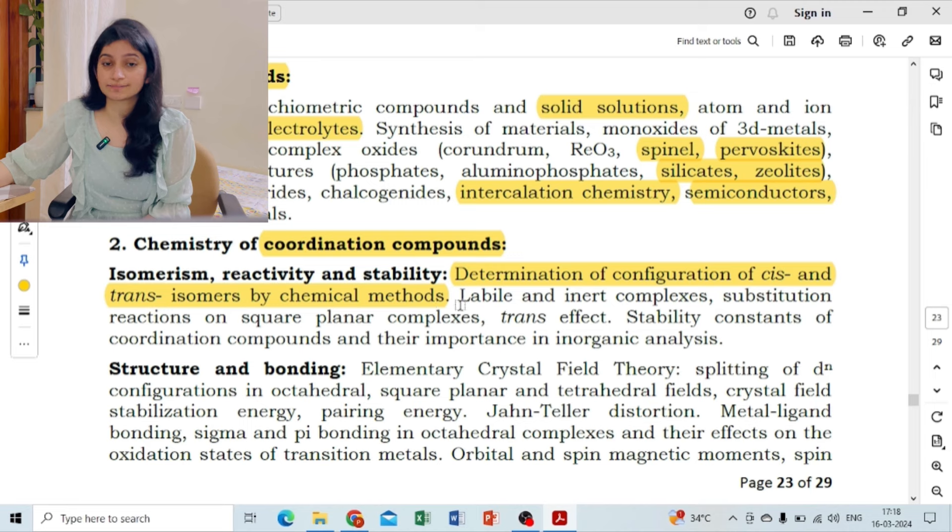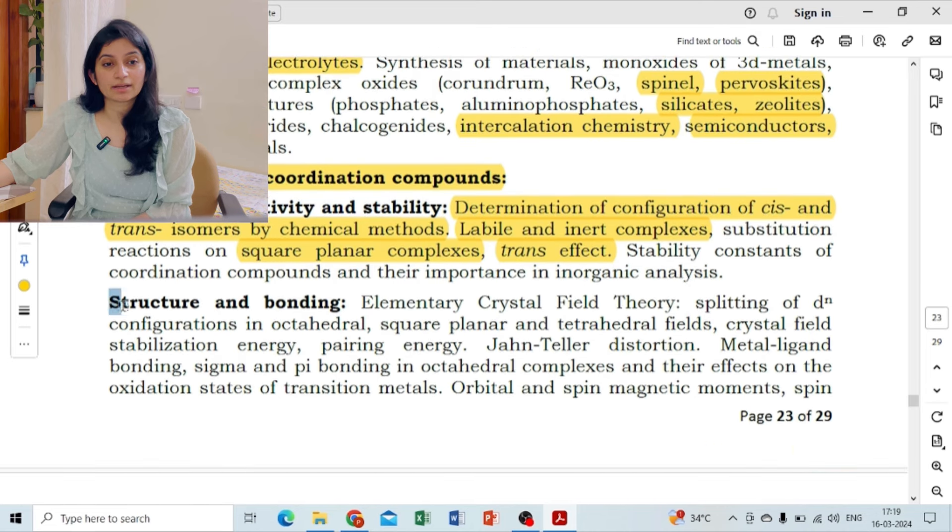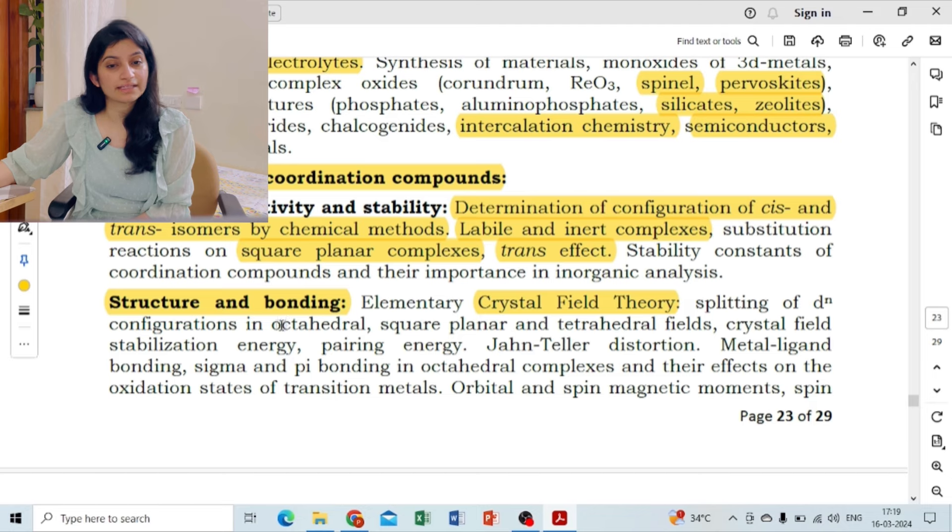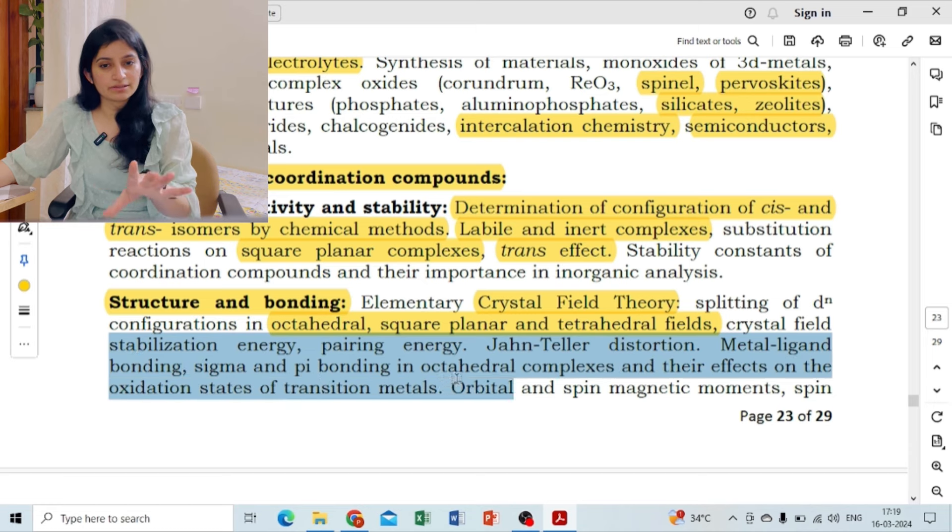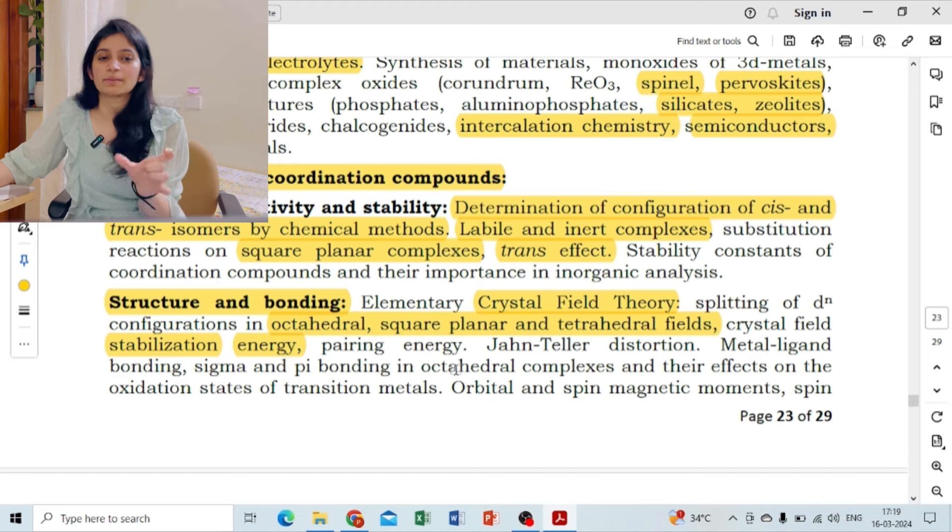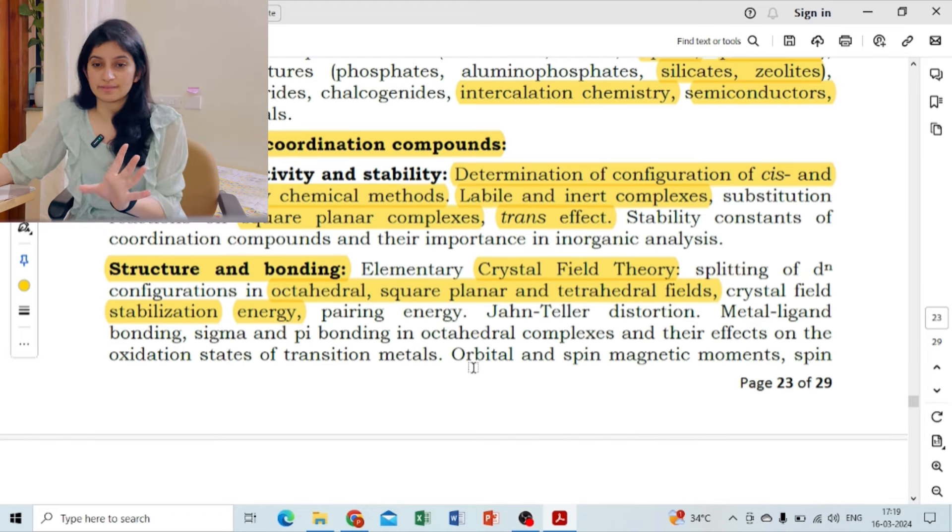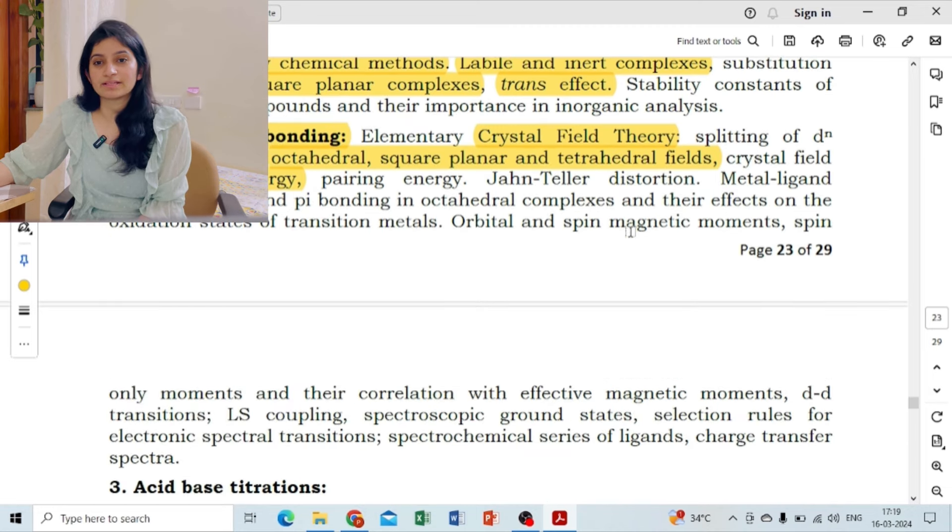In coordination chemistry you don't have to refer a different book. If you don't have notes that are sufficient, if you don't make notes then you can take a book. But in that you have to do all the things - the basic portion of theory, the reaction mechanism chapter, what is labile and inert complexes, square planar reaction mechanism, trans effect, the series.